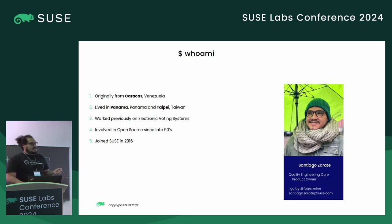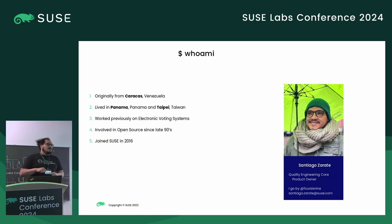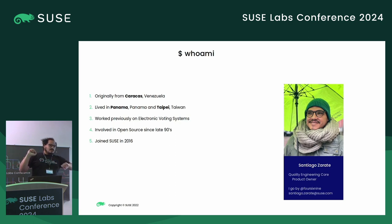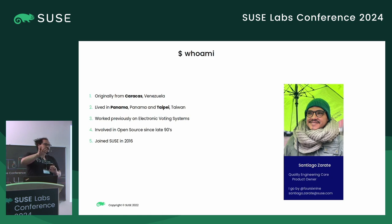I've been in SUSE since 2016, and currently I am the product owner for the Quality Engineering Core Team, which is basically one of the teams dedicated to testing all the maintenance updates, everything that goes through OpenSUSE, and most things that go through the product we have in development that is not specialized. That means we don't do SAP, we don't do kernel, but we do databases, we do web servers, we do active directory, things like this.